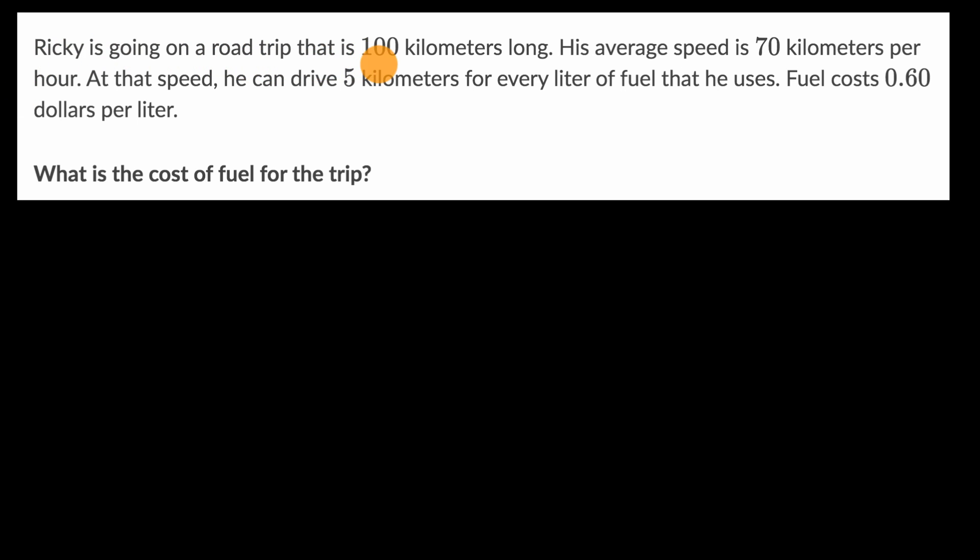We're told that Ricky is going on a road trip that is 100 kilometers long. His average speed is 70 kilometers per hour. At that speed, he can drive five kilometers for every liter of fuel that he uses. Fuel costs 0.6 dollars per liter, the equivalent of 60 cents per liter, but they wrote it as 0.6 dollars per liter. What is the cost of fuel for the trip? Pause the video and see if you can figure that out.